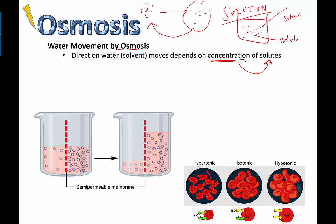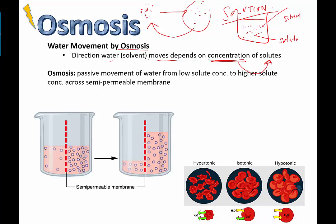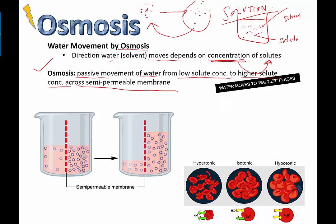So the definition of osmosis is this: the passive movement of water - passive meaning no energy required - from low solute concentrations to higher solute concentrations across a semi-permeable membrane. What it's basically telling us is that water moves to saltier places. When we say saltier, we're not just talking about sodium chloride - it could be any solute: glucose dissolved in solution, calcium phosphate, sodium phosphate, whatever. Salt is a general term. So when you're doing these problems, think to yourself: water moves to saltier places.